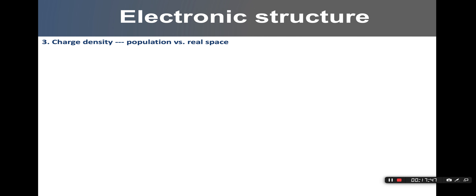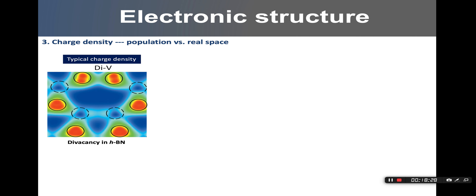The third type of electronic structure is charge density. While density of states and band structure measure energy distribution as a function of reciprocal space, charge density captures what happens in real space — especially important for bond forming or charge distribution among different species. Charge density is the population, or density, of electrons in real space. A typical charge density is a 3D isosurface, and we usually take a 2D contour where different colors demonstrate different electron densities.